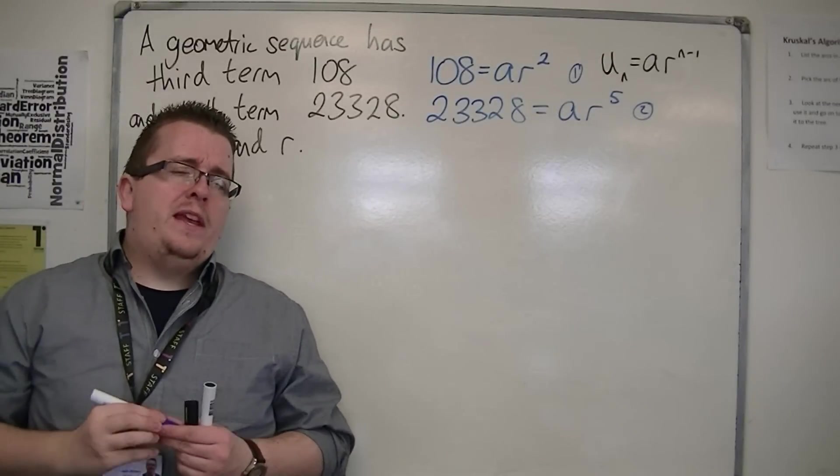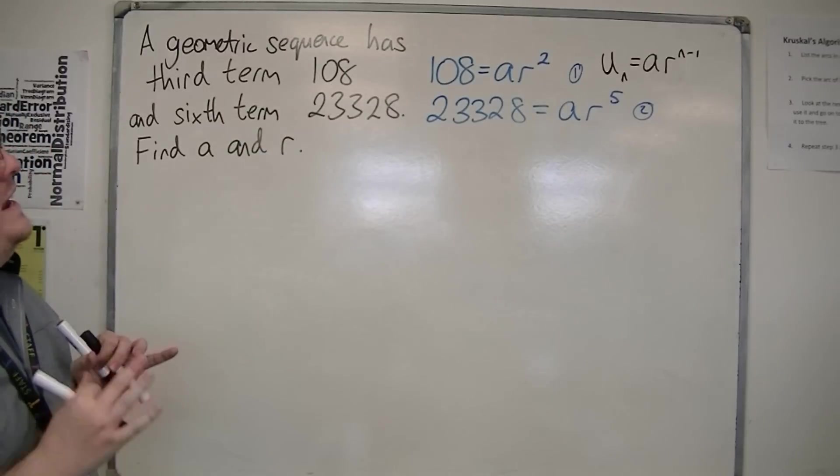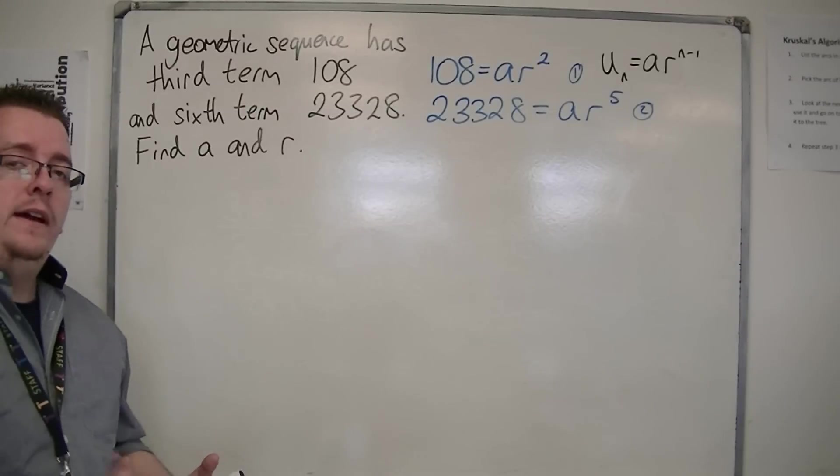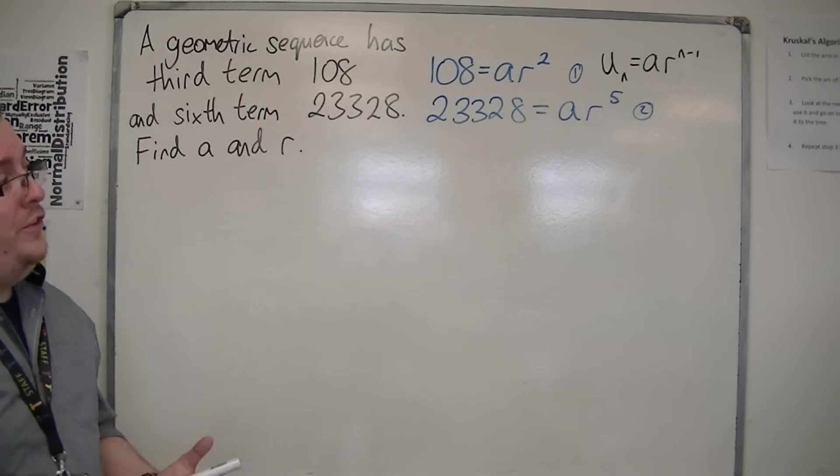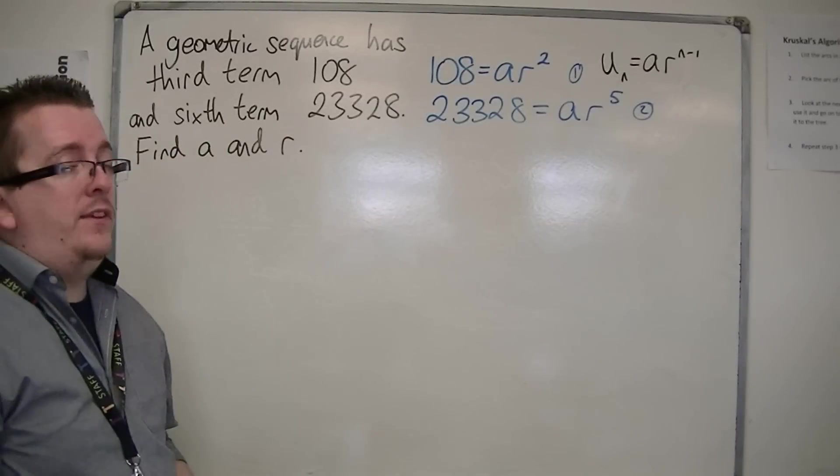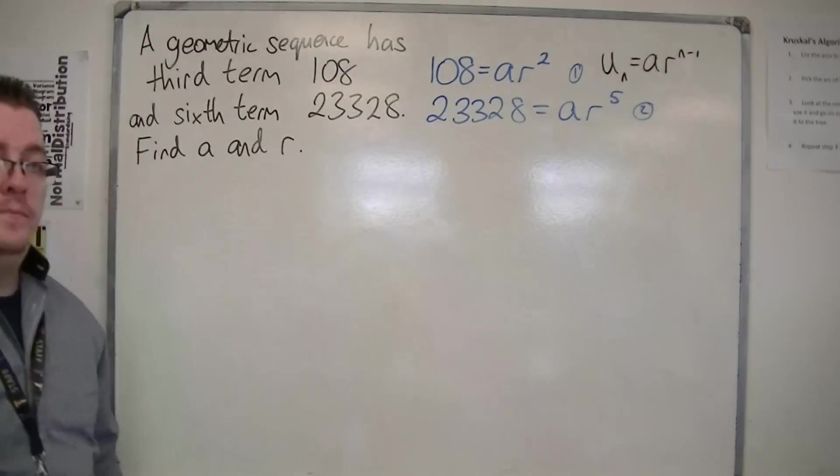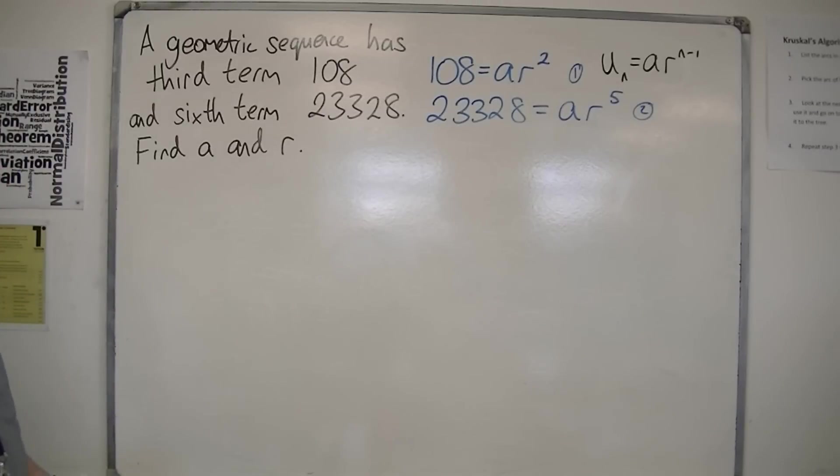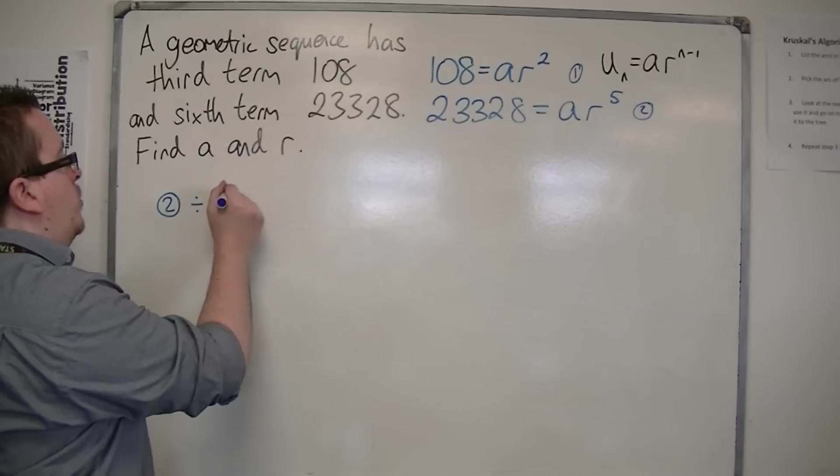Now when you're dealing with simultaneous equations of this style, it's not immediately obvious what you can do, because we can't subtract one equation from the other and hope to eliminate the A or the R. In order to eliminate the A, because that's really the one that's going to be easiest to get rid of at this point, is to divide one equation by the other, so effectively find the ratio of the two equations.